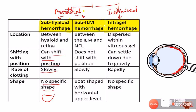The sub-ILM hemorrhage lies between the nerve fiber layer of the retina and the internal limiting membrane. It can be differentiated from subhyloid hemorrhage using the shifting test: sub-ILM hemorrhage will not shift with patient position, whereas subhyloid hemorrhage will shift. The rate of clotting in sub-ILM hemorrhage is very slow, and the shape can be boat-shaped with a horizontal upper level.